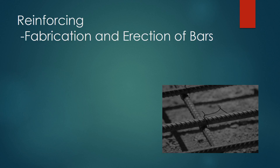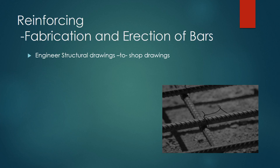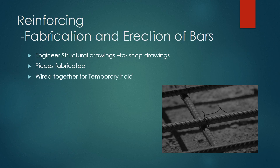For the fabrication and erection of bars, the engineer makes structural drawings, which are turned into shop drawings for the reinforcing fabricator. The fabricator cuts, bends, and organizes pieces for a project. Reinforcement is wired together for temporary hold until concrete flows around bars, then concrete transfers the load between bars instead of the wire. In some instances, bars are held together by welds or sleeve splices.